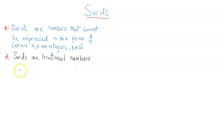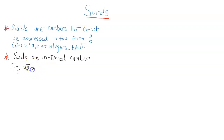For example, the square root of 2 is a surd because there is no way the square root of 2 can be written as a fraction. Also, the square root of 3 is a surd, the square root of 5, the square root of 7, and so on and so forth.